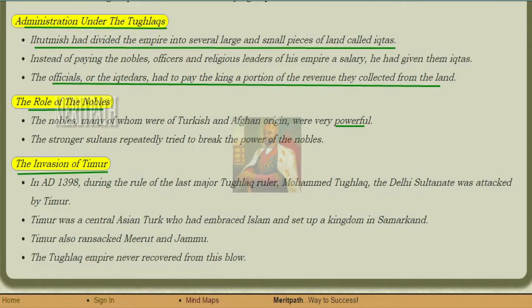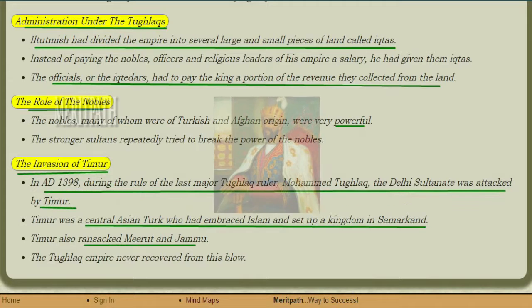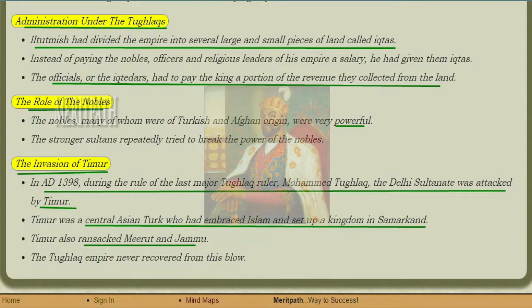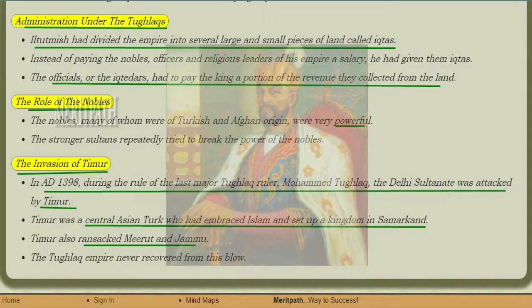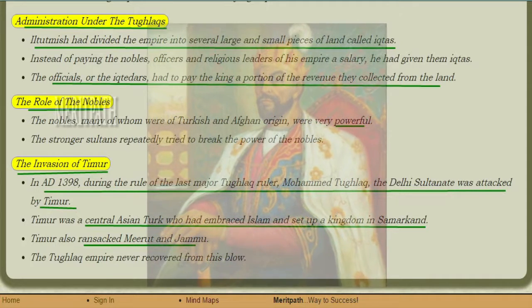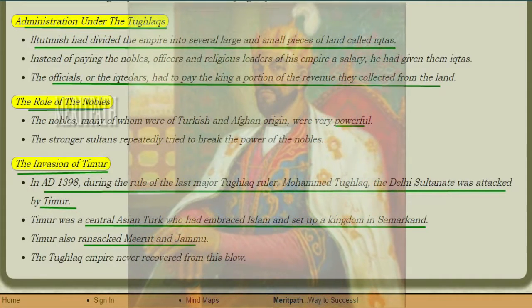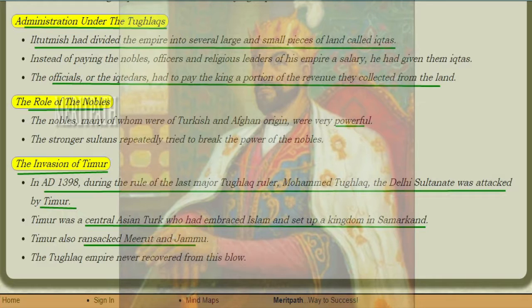Then came the invasion of Timur. In AD 1398, during the rule of the later Tughlaqs, Delhi Sultanate was attacked by Timur, a Central Asian Turkish ruler who had embraced Islam and set up a kingdom in Samarkand. He ransacked Meerut and Jammu, and the Tughlaq empire never recovered.